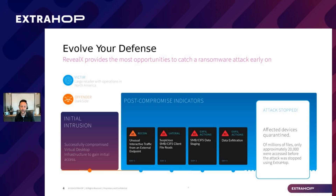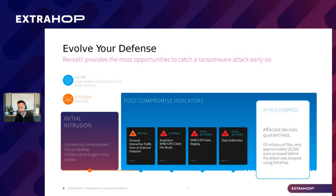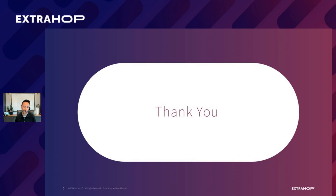That last box is showing that if you do have a threat actor that makes that initial intrusion and gets access, hopefully with the power of the network and the power of RevealX, you have the ability to understand what's happening. Maybe you'll have a little bit of unusual interactive traffic from an external endpoint, maybe a few file reads, but hopefully you will catch it because of our platform, our alerting, and the visibility we give you — so that you have the ability to cut it off quicker and not allow it to get to the point of encrypting or exfiltrating data used for extortion.